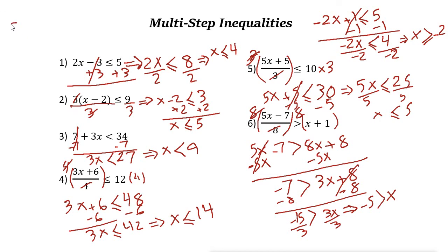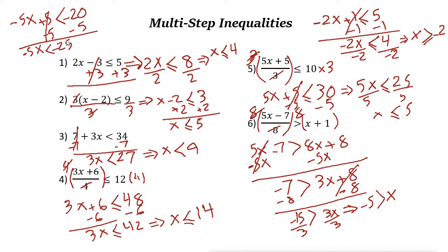Another example: negative 5x plus 5 less than negative 20. Subtract 5 from both sides — these cancel out — giving negative 5x less than negative 25. Now divide both sides by negative 5. When dividing by a negative number, flip the direction of the inequality. These two cancel out and x is x, but the less than sign changes to greater than. Negative 25 divided by negative 5 is just 5, so x greater than 5.